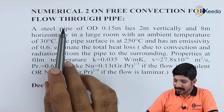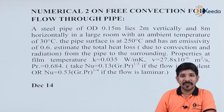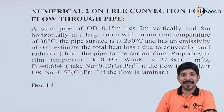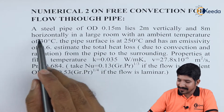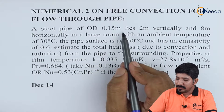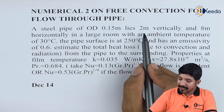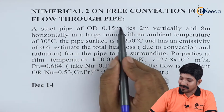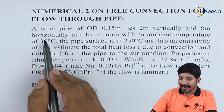The problem in this case is again on flow through a pipe. There are two cases: one when the pipe is kept vertical and then when the pipe is kept horizontal. The problem says a steel pipe of outer diameter 0.15 meter lies 2 meters vertically and 8 meters horizontally. They have given a steel pipe whose outer diameter is specified, and the pipe is arranged so that it remains 2 meters vertically and 8 meters horizontally.